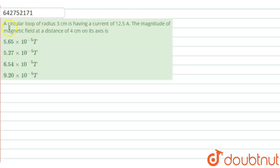Student, the question is: a circular loop of radius 3 cm is having a current of 12.5 ampere. The magnitude of magnetic field at a distance of 4 cm on its axis is.